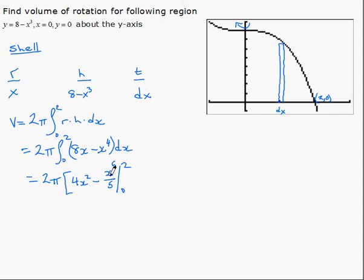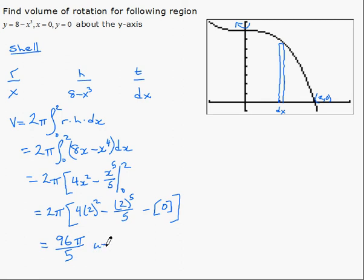If we put 0 here and here it's going to be 0. So we end up with 2π multiplied by 4 times 2 squared minus 2 to the 5 over 5, minus 0, which when we multiply that out is 96π/5 units cubed.